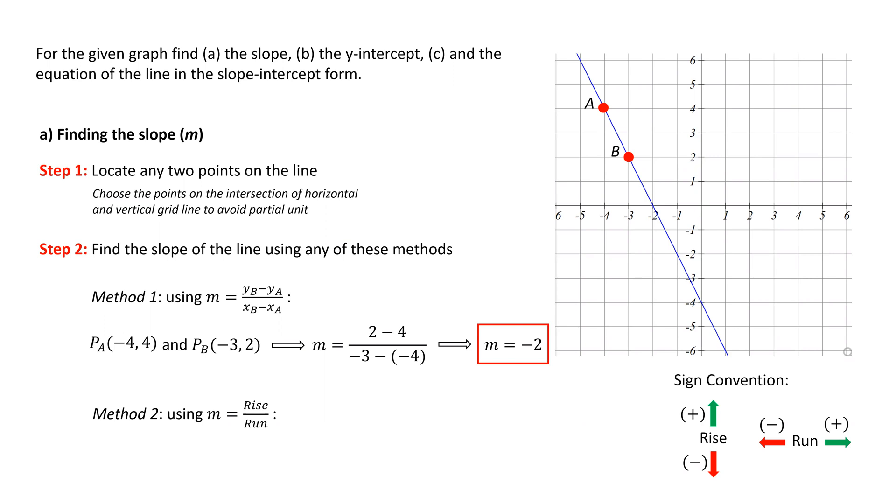Okay, now let's start from point A and get to point B. To move from A to B, we need to go two units downward, so the rise equals negative 2.